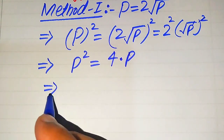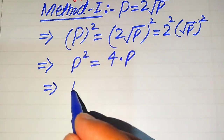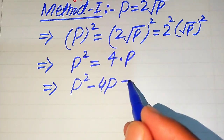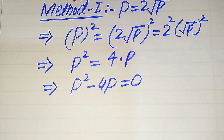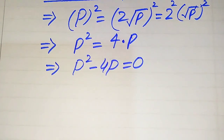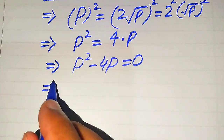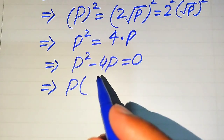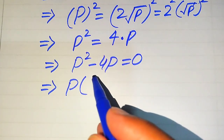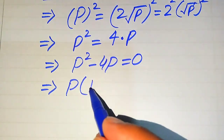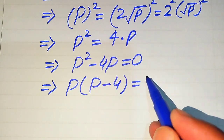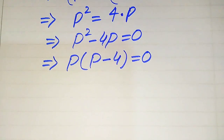In the next step we move 4p to the left hand side, and it becomes p squared minus 4p equals 0. Both terms involve p, so we take p as common factor, and we get p times (p minus 4) equals 0.